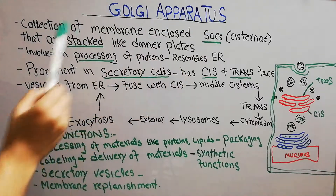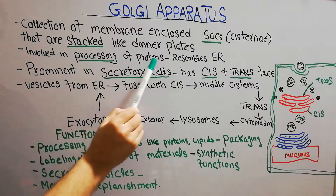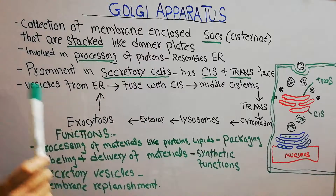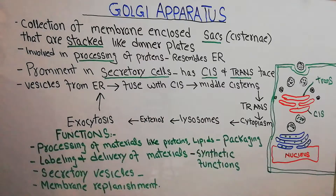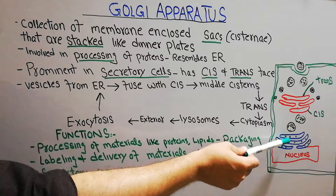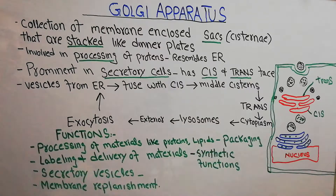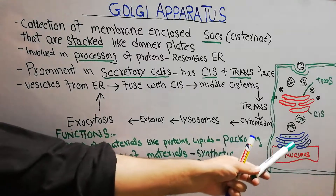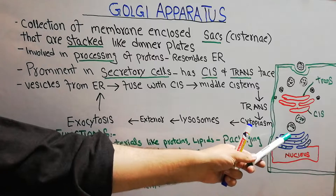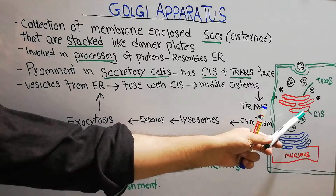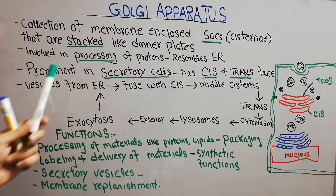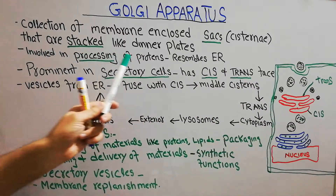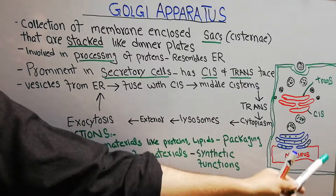Golgi apparatus is also known as the Golgi body and is basically involved in the processing of proteins. The order for protein formation starts from the nucleus in the form of messenger RNA, which is decoded with the help of ribosomes in the endoplasmic reticulum. From the endoplasmic reticulum, proteins are collected in vesicles and begin their movement towards the Golgi apparatus.